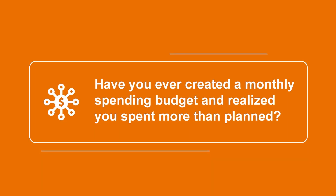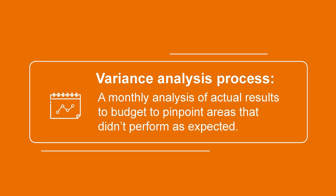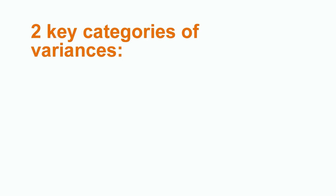Have you ever created a monthly spending budget for yourself and then realized after the fact that you spent way more than planned? When this happens, we may want to go back to the drawing board and investigate where we overspent and think about how we can improve going forward. Companies go through this very same process on a regular basis. In order to plan for future operations and control spending, most companies produce monthly budgets to evaluate their performance. At the end of each month, this allows them to compare actual results to their budget and pinpoint areas that didn't go as planned. This is the variance analysis process in action, where companies identify specific differences or variances, allowing organizations to investigate areas of concern so they can improve going forward. Variance analysis ultimately shines a spotlight on the differences between a company's budgeted and actual financial performance.